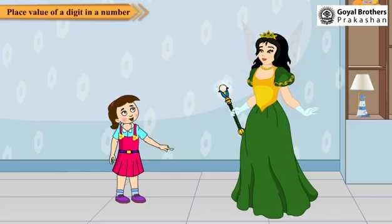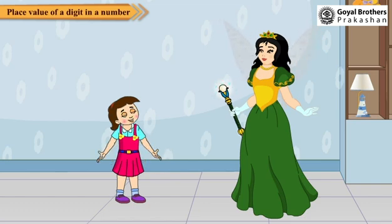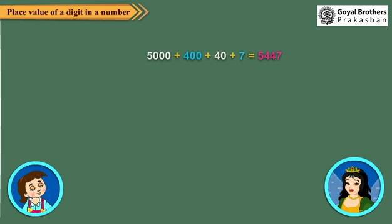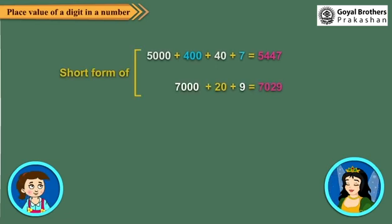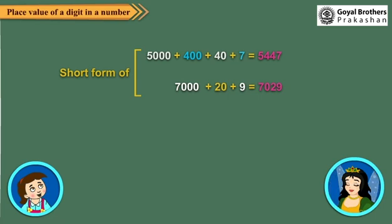Oh, I remember — I learned it in my previous class for three-digit numbers. Yes, Neha. Then you also remember the short form? Yes, Tina. I know the short form is given by combining the face value of each digit at the correct places. Well done, Neha. Let us take some more examples.